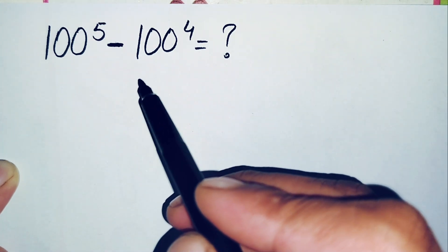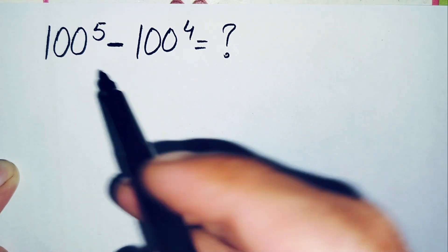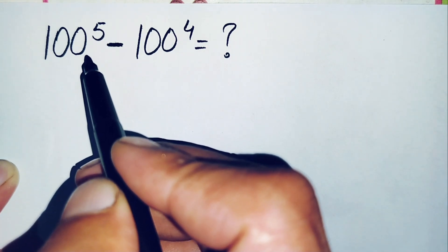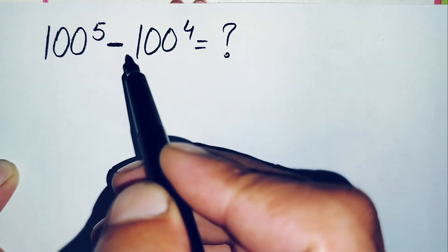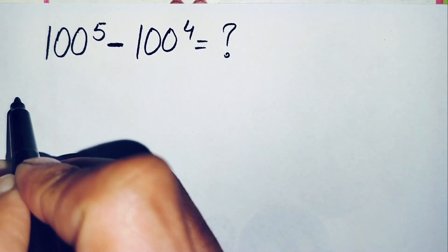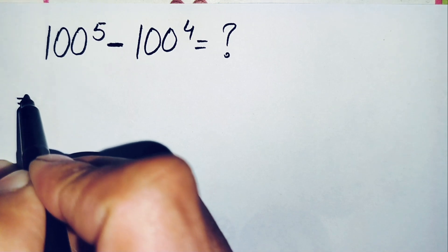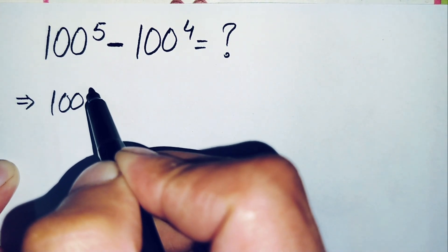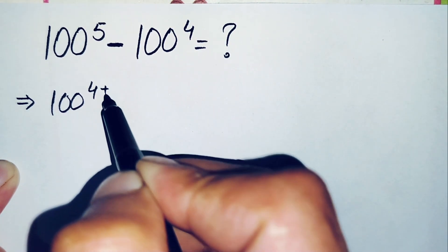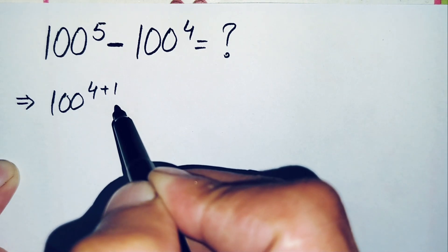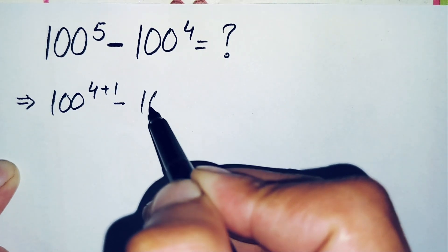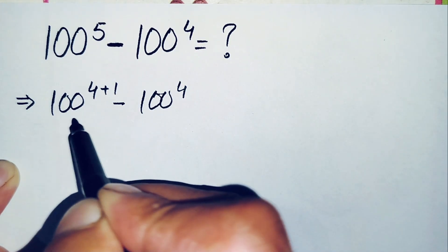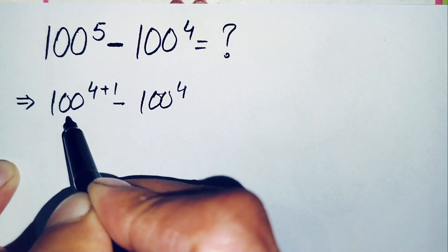To solve this problem, first of all we will change the power 5 to the sum of 4 plus 1. So this equation will become 100 to the power of 4 plus 1, minus 100 to the power 4.